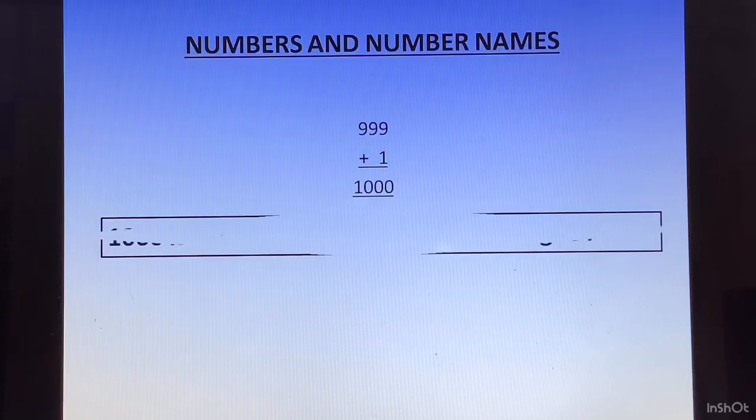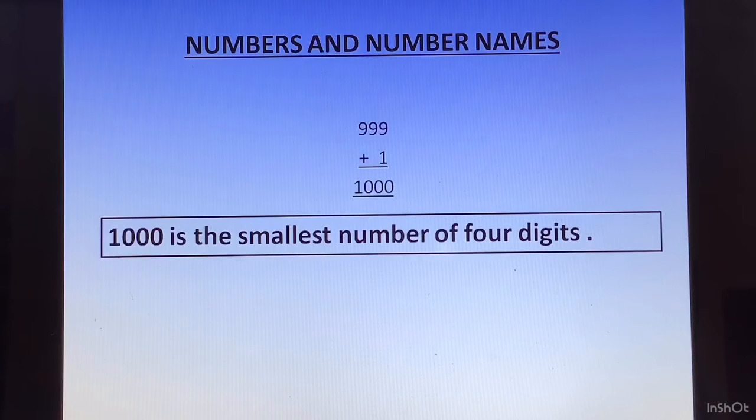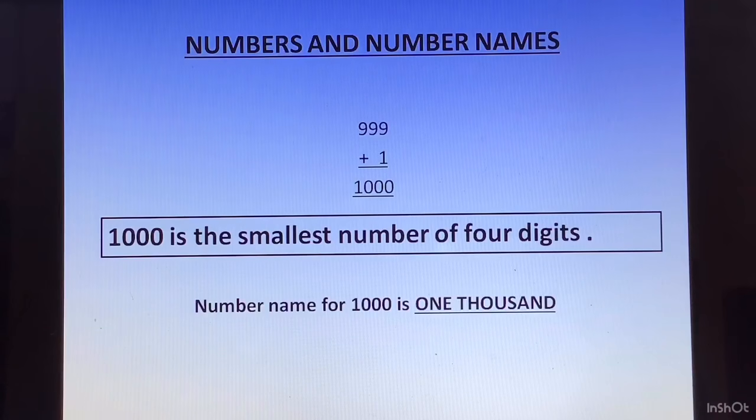1000 is the smallest number of 4 digits and we call it one thousand. The number name of 1000 is one thousand.